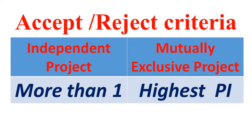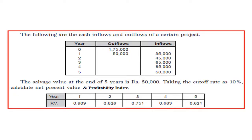Now we will read the question. The following are the cash inflows and outflows of a certain project. For year zero, the investment is 1,75,000. In the first year, there is also an outflow of 50,000. Inflows start from year one: 35,000; year two: 45,000; year three: 65,000; year four: 85,000; year five: 50,000. The salvage value at the end of the fifth year is 50,000. The cutoff rate is 10 percent.